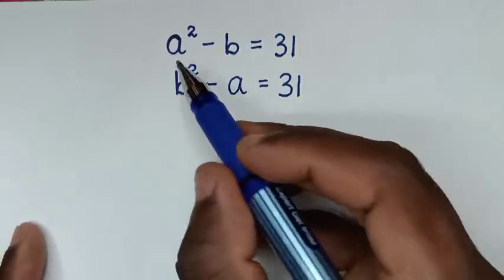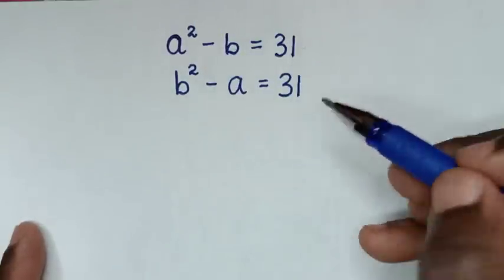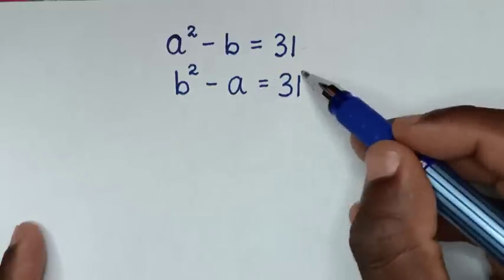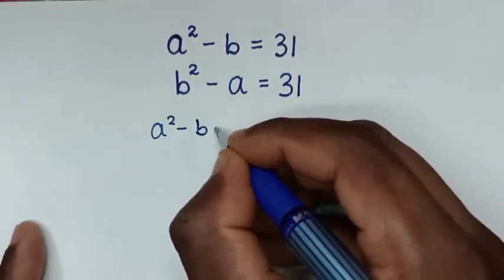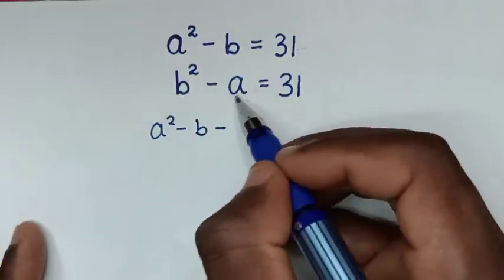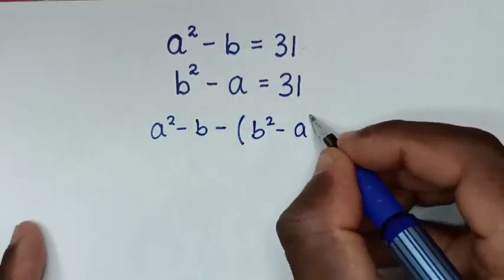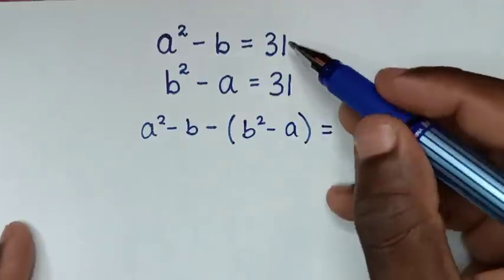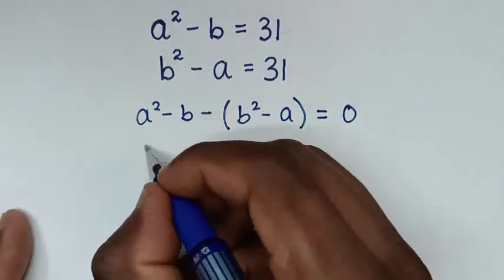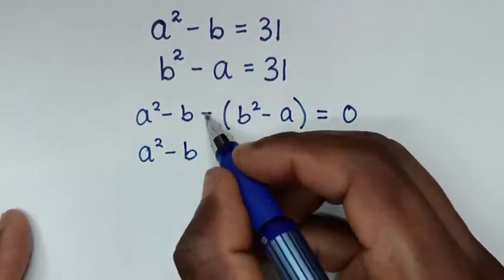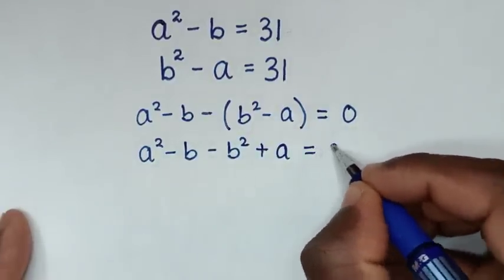In the first step, we take the first equation minus the second equation. Because the right side of both equations is 31, the right side gives 31 minus 31 equals 0. From the left side, it is a squared minus b, then minus bracket b squared minus a bracket. Opening the brackets gives a squared minus b minus b squared plus a equals 0.